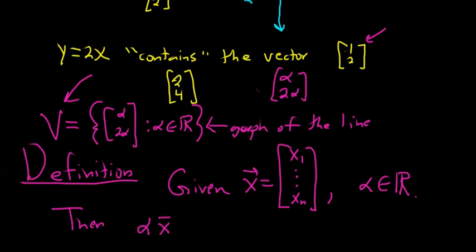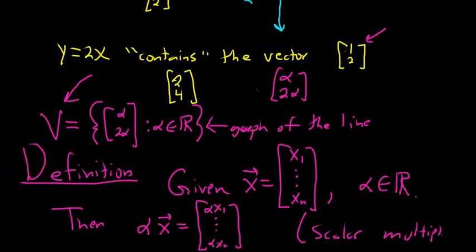Then we define alpha x as the new vector where we multiply each component by alpha: (alpha x₁, ..., alpha xₙ). We call this the scalar product, and this operation is called scalar multiplication. A scalar is a number from a field, typically the real numbers or complex numbers. For our purposes, we'll typically have real numbers.